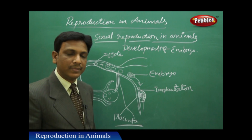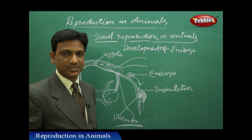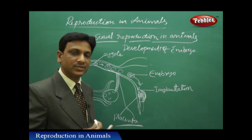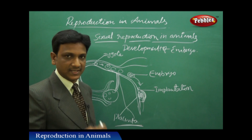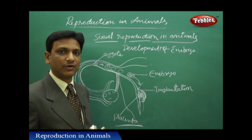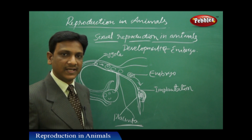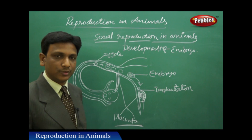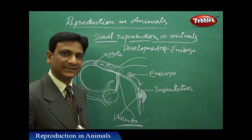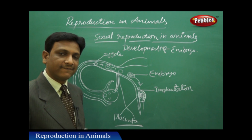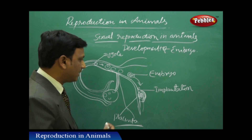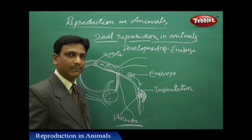The embryo undergoes differentiation. It divides repeatedly, producing hundreds and hundreds of cells. These cells differentiate — some develop into hands, some into legs, some into the stomach, some into the brain, some into the liver, some into the lungs. Likewise, all different external and internal organs of the baby develop from the embryo.